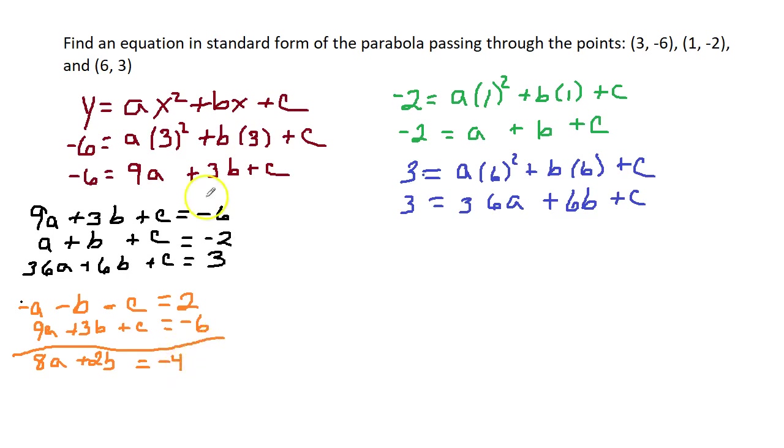Now, I'm going to do an elimination with equation 2 and equation 3, eliminating the c's. Once again, negative 1 times equation 2. This time, I'm going to add it to equation 3. We have negative a minus b minus c equals 2, and we're going to add it to equation 3, which is 36a plus 6b plus c equals 3.